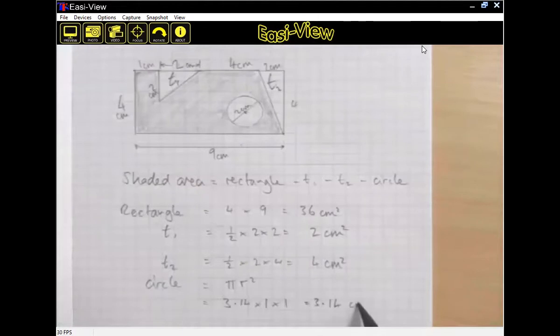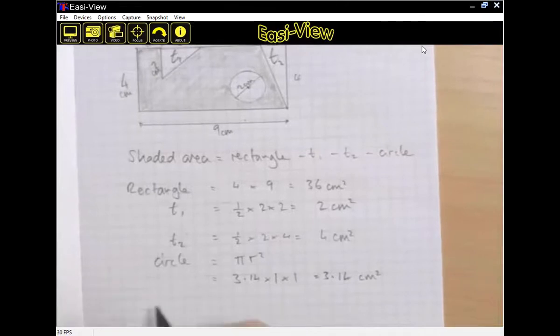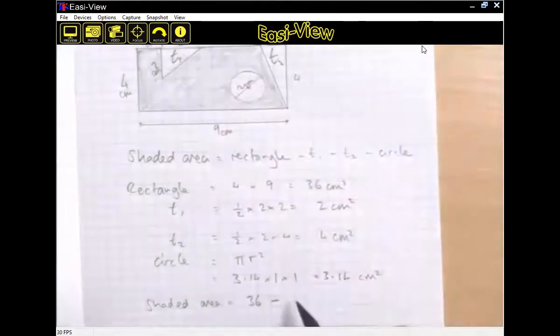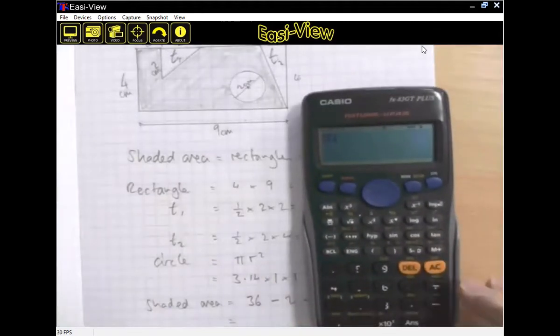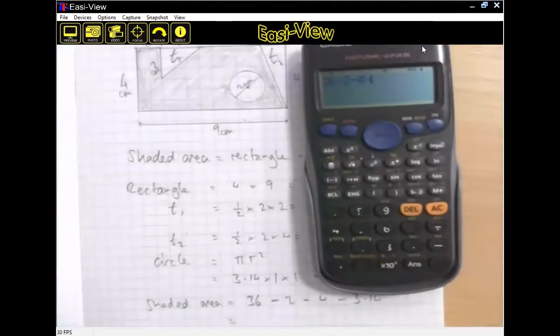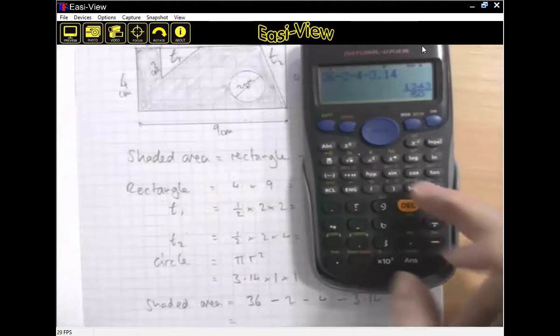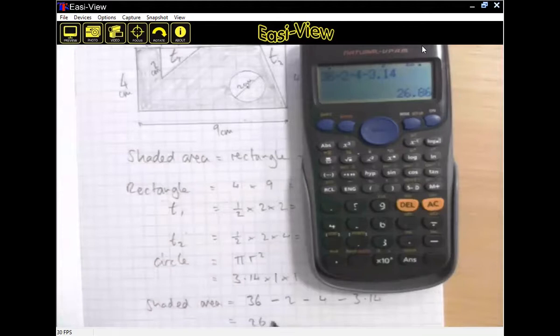So look really hard at my layout I've got here. I've planned out what it is I want to do. I've really carefully set out each bit. And then my last step is to just actually answer the question then. So the shaded area is the rectangle, which is 36, take off this triangle over here, take off this triangle, which I know was 4, and then finally take off the circle, take off that one as well. Check I get that right. So 36, minus 2, minus, what is it, minus 4, minus 3.14. 26.86 centimeters squared.